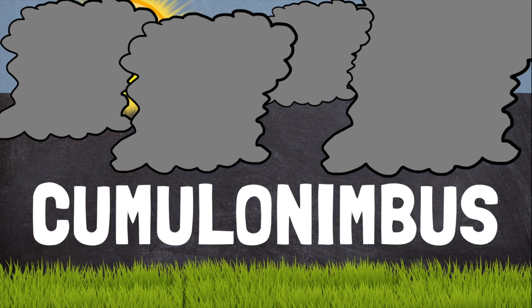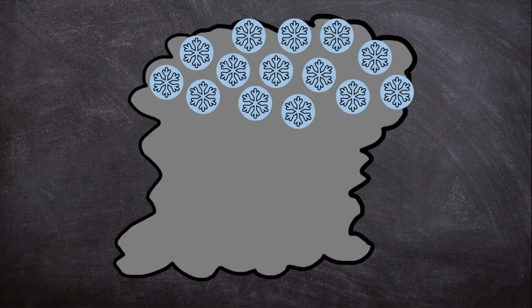These clouds, also called thunderheads, can reach up to 12 miles into the sky. The upper part of the thunderhead is made of ice crystals. These frozen raindrops bump into each other as they move around in the clouds.